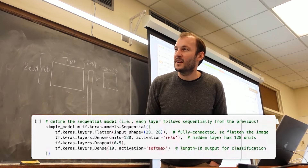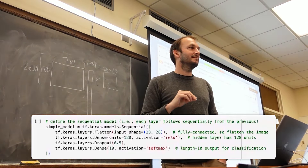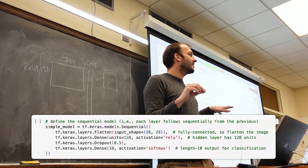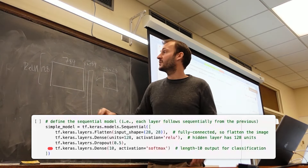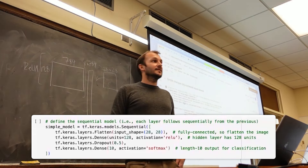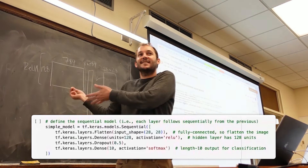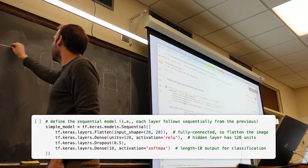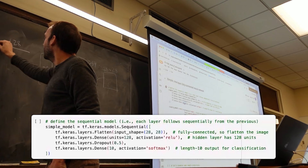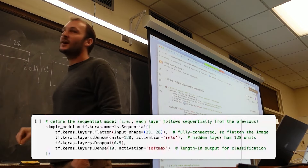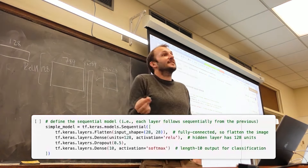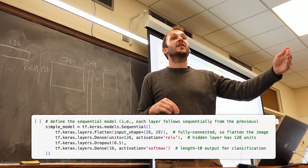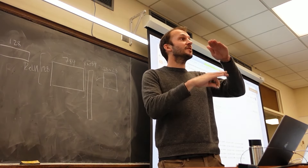Then we have a dropout layer — we'll talk about that next class. Then another dense layer. The input dimensions are automatically 128 because that's the output of the previous layer. The output dimension is 10 — that's the number of categories of MNIST digits. If I don't choose 10, the output of my Keras layer won't match the size of my labels. The Y_train and Y_test labels each have 10 entries because the goal is to classify into one of 10 handwritten digit categories.